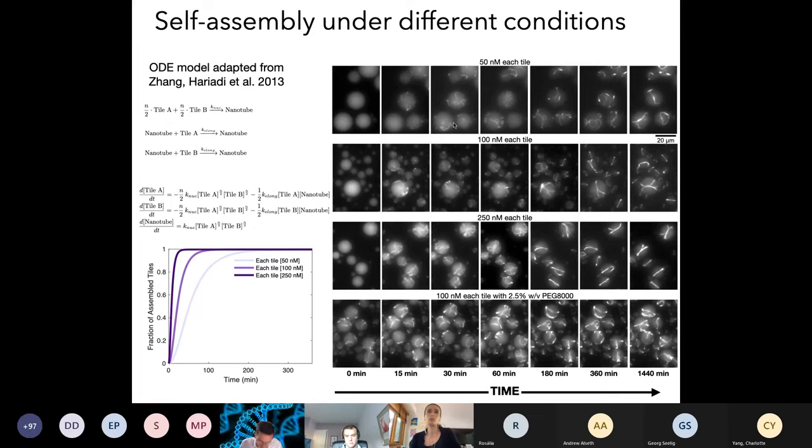This slide is busy, but what you need to pay attention to for now is mostly the right side. Each row refers to assembly under different concentrations of tiles. We go from 50 nanomolar to 250. At the end, the last row is showing you 100 nanomolar using PEG. Each column corresponds to a different point in time. You can see that at 50 nanomolar each tile, we have to wait for probably half an hour before we see nanotubes that are quite long. But with 250 nanomolar, within 15 minutes, you can already see pretty long nanotubes. Clearly, there's more bundles and more rings in the 250 nanomolar tile. When we add crowding agent, which is PEG, the nanotubes form immediately. Right after we mix them, the nanotubes are already formed.